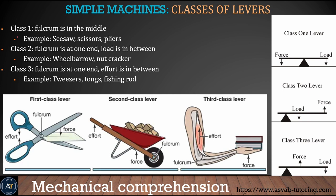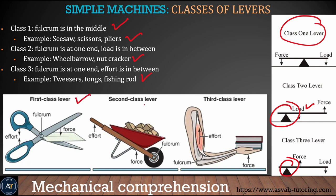The lever class is determined by fulcrum location and load position. First class lever: fulcrum in the middle. Second class lever: fulcrum at the end, load in between. Third class lever: fulcrum at one end, effort in between. Make sure you write down these examples — they will ask you in the test. Learn the pictures of first, second, and third class levers.